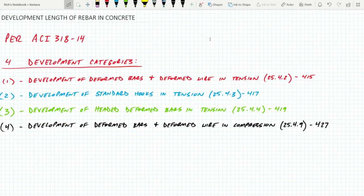In today's example, we're going to be going over development lengths of rebar in concrete. We will be going step-by-step through the concrete code, which is the ACI, and we're going to be using the most up-to-date version, which is ACI 318-14.